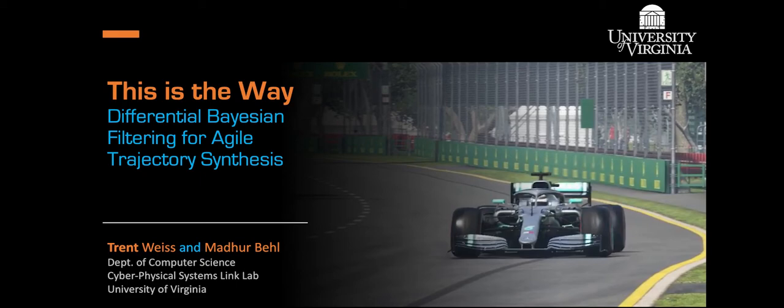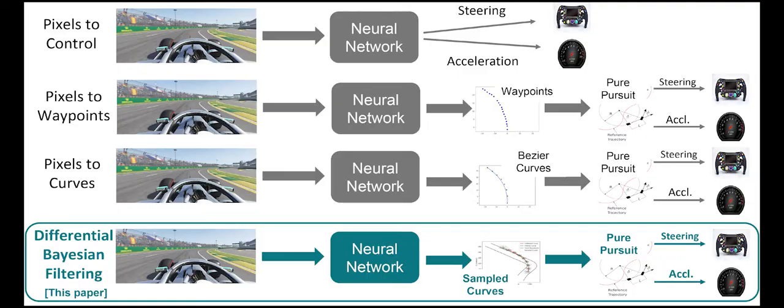We present Differential Bayesian Filtering, a new method for generating trajectories for high-speed autonomous racing. Compared to end-to-end learning-based algorithms for autonomous driving, our method combines the knowledge of vehicle dynamics and a sampling technique to generate optimal race lines at runtime, which are then passed on to a low-level controller such as Pure Pursuit.